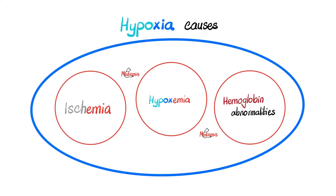What do you mean by something else? The causes of hypoxia, as we discussed in the last video, include ischemia, hypoxemia, and hemoglobin abnormalities. Let's say that I have hypotension and there is not enough blood reaching the kidney, or the lungs, or the liver — that's called ischemia. It could also be a clot, a thrombus. What if the clot dislodges and goes somewhere else? Embolus. How about atherosclerosis? Fibromuscular dysplasia. All of these are ischemic causes of hypoxia.